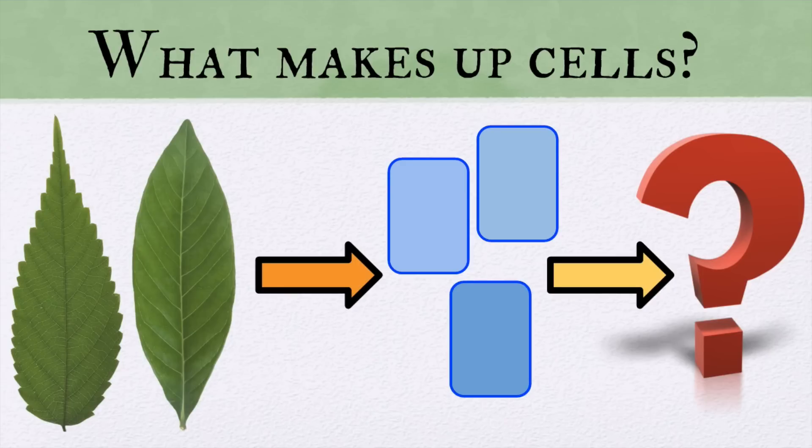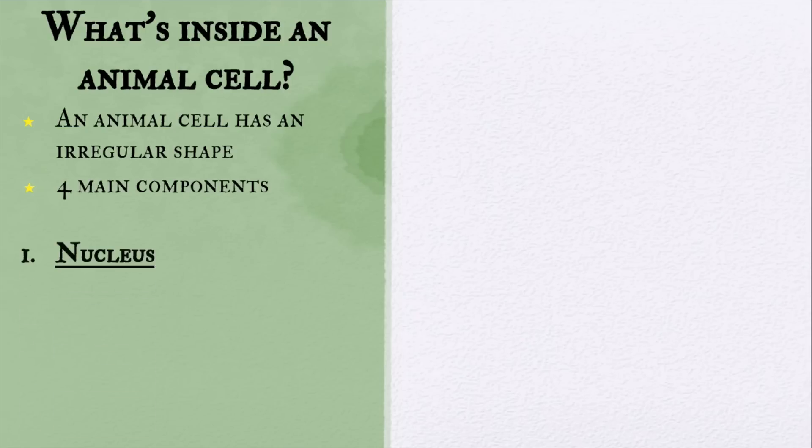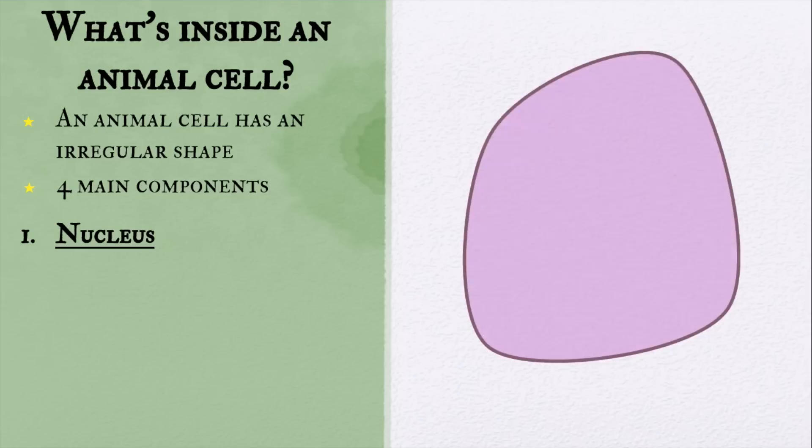And we're back. First, we are going to be learning about what's inside an animal cell. An animal cell has an irregular shape. Next, how many main components does an animal cell consist of? Go ahead and write your answers down. And we're back — the answer is four main components. The first is the nucleus, which is located right here inside the cell.